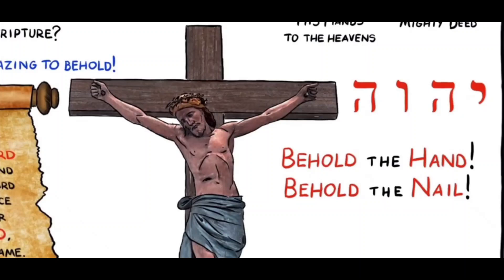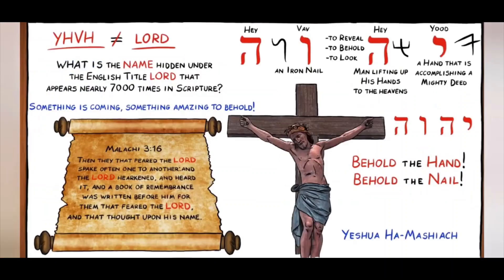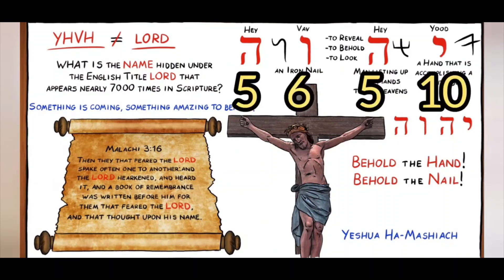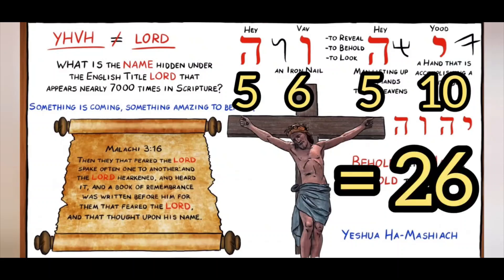A lot of times people will say, why does God equal 26, or why does the name of God equal 26? Well, it's because it's in these Hebrew letters — Yod-Heh-Vav-Heh — and that equals 10-5-6-5. This screenshot was from C.J. Lovick's video, I can link that.